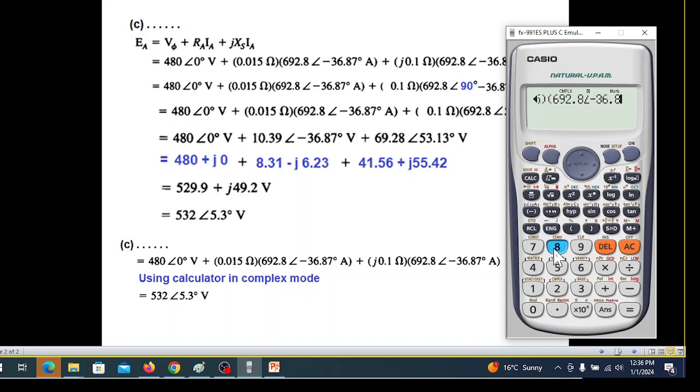Then plus bracket - for j we write i, so 0.1i bracket close, then bracket 692.8 angle minus 36.87 bracket close, equal sign.